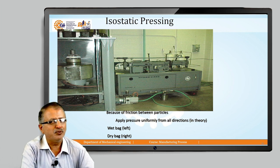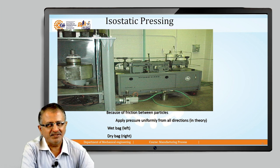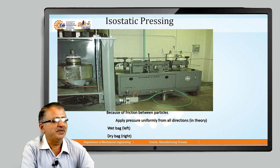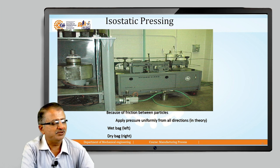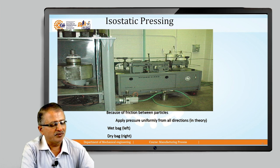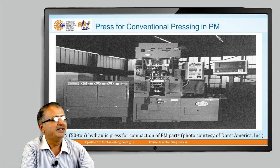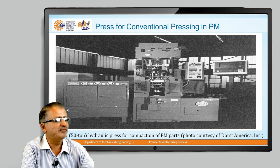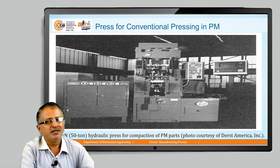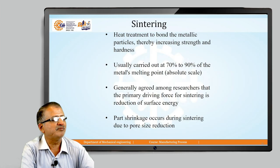For isostatic pressing, both in cold state and hot compaction, it is deployed because it applies pressure uniformly from all directions, giving a very good green compact suitable for the purpose. Bigger size machines are available for uniform application of pressure in all directions. A 50-ton hydraulic press is used for compaction of PM parts, giving a very good rate of production, and cost for mass production is viable.